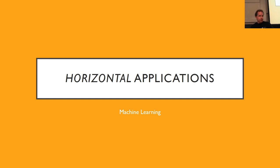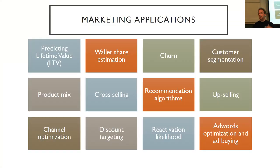I'm going to split them into two groups: horizontal and vertical. In business, horizontal means something you do across different kinds of business, whereas vertical means something you do within a business or supply chain or process. An example of horizontal applications is everything involving marketing — every company has to try to sell more products to its customers, and so each of these boxes are examples of things people use machine learning for in marketing.